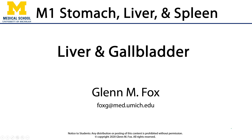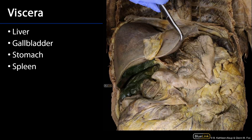Let's talk about the structures of the liver and the gallbladder. Here we're looking at an anterior view of the abdominal cavity. We can see the diaphragm separating the abdominal cavity from the thoracic cavity. The liver is being retracted up and away, giving us a view of several of the main targets of our investigation in this session.